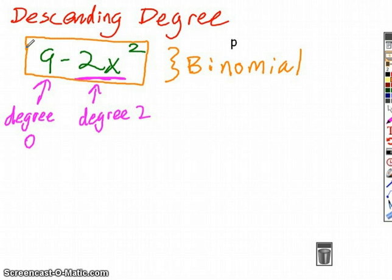So if I wanted to write this binomial in descending order according to the degree, what would be the descending order? Two is the highest power first, right? Look at the sign that's attached with it. So what do I write? Negative 2x squared, and then what else would need to come after it? Plus 9. So are we all good with how to write a polynomial in descending order?